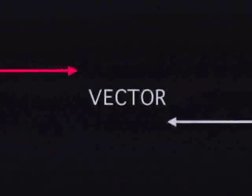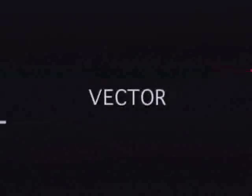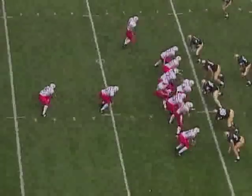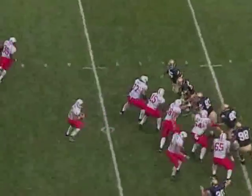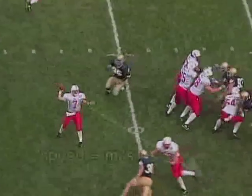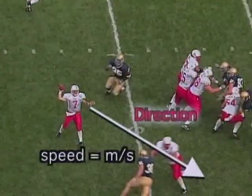A vector is a fancy name for an arrow. When Eric throws the ball, it has a direction as well as a speed. The vector points in the direction he throws, and the length of this arrow is equal to its speed, in meters per second.